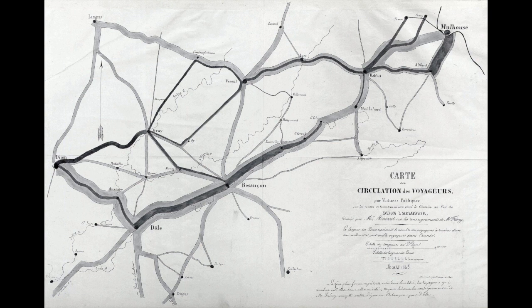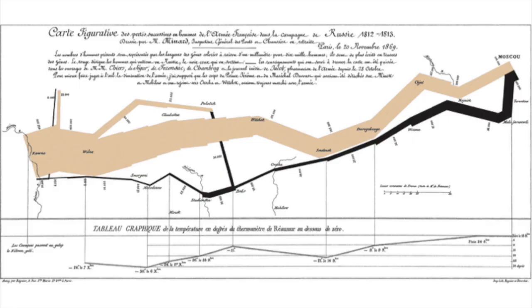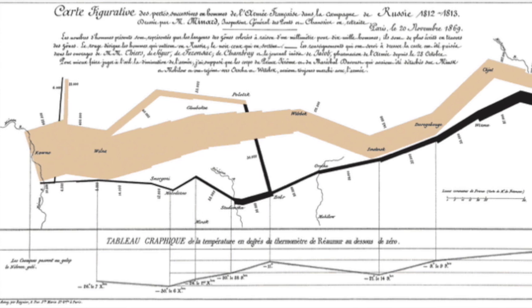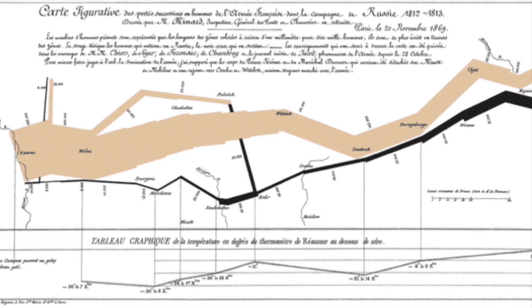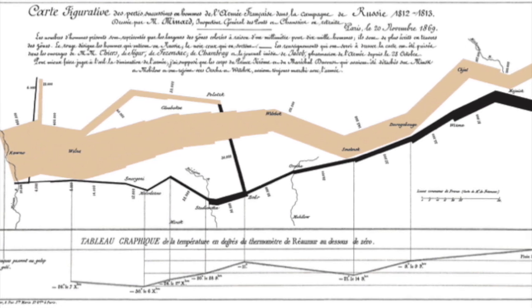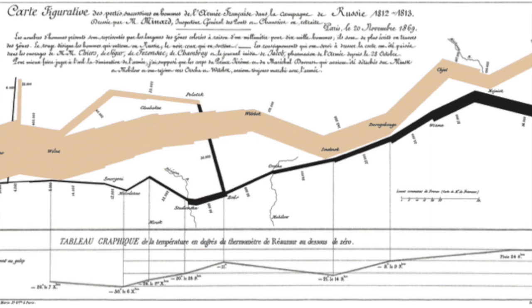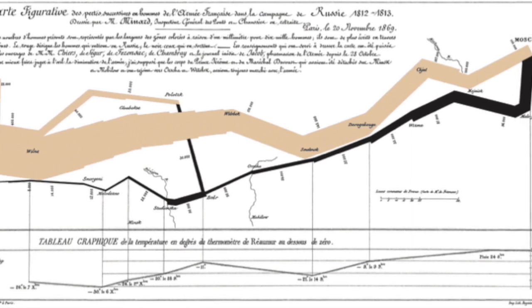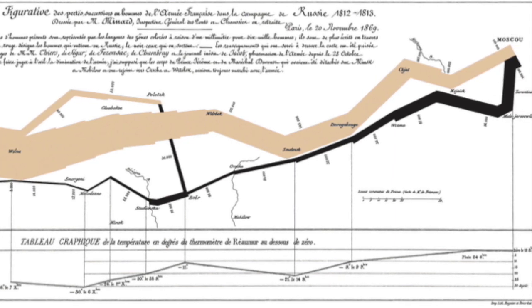However, there is arguably an even earlier example — a kind of precursor to the isochrone maps we know today. This 1845 map by Charles Maynard is a flow map of road traffic between Dijon and Mulhouse in France. Later, in 1869, Maynard would create his most famous map depicting the 1812 defeat of Napoleon by Russian troops. This map is notable for displaying six types of data in two dimensions.